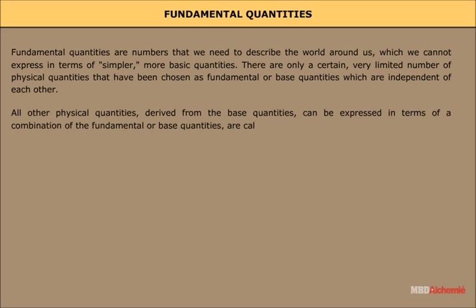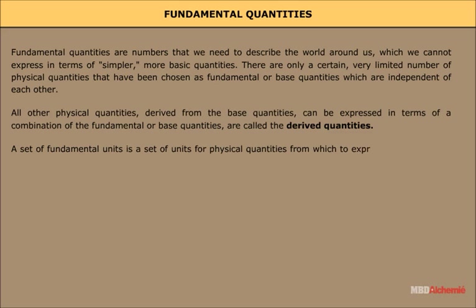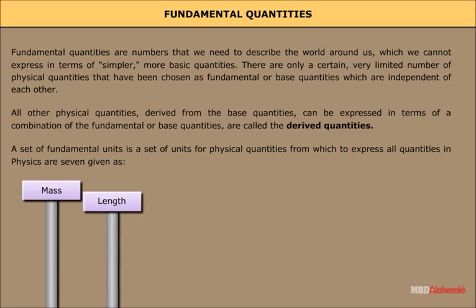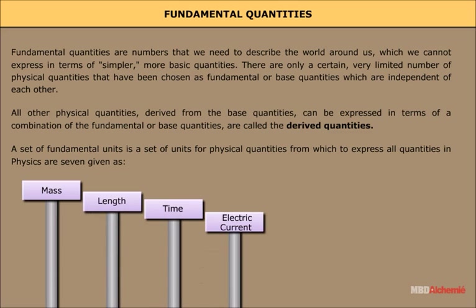The derived quantities are called the derived quantities. A set of fundamental units is a set of units for physical quantities from which to express all quantities in physics. There are seven given as: mass, length, time, electric current, thermodynamic temperature, amount of substance, and luminous intensity.